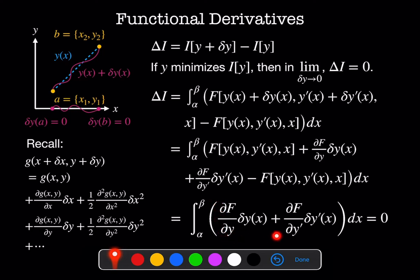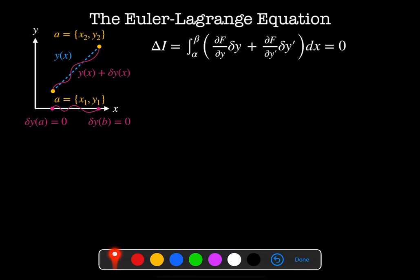So now we're going to figure out what to do about this term here. We have our integral delta I and these terms that are linear in delta y and delta y prime, and what we're going to do is first look at this term and integrate it by parts. We've got the integral from alpha to beta of df by dy prime delta y prime dx, and delta y prime we can write as d delta y by dx.